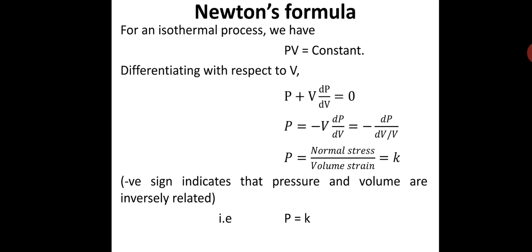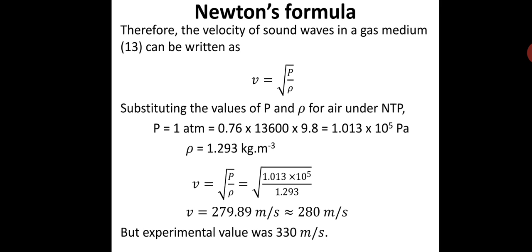Differentiating PV equals constant with respect to V, we get p plus V times dp/dV equals zero. Rearranging: p equals minus V times dp/dV, or equivalently minus dp divided by dV/V. Here dp is the excess pressure (stress) and dV/V is the volume strain, so p equals normal stress divided by volume strain, which is the bulk modulus K. Therefore, for an isothermal process, K equals p, and we substitute p for K in v equals sqrt(K/rho).